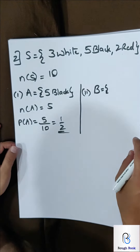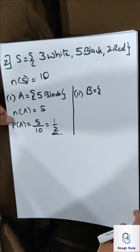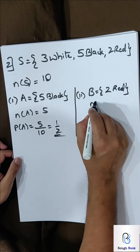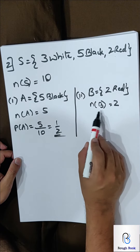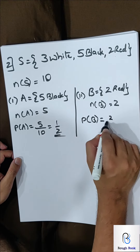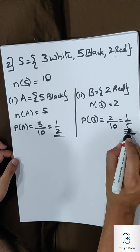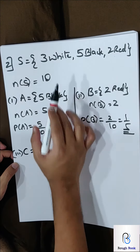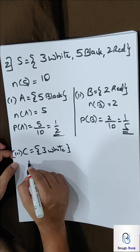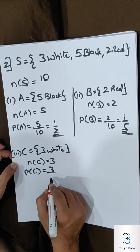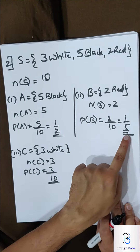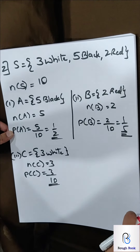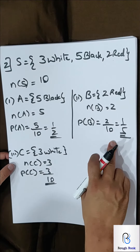Event B: a red ball — 2 red balls. Number of B is 2. Probability of B = 2 by 10 = 1 by 5. Event C: a white ball — 3 white. Number of C becomes 3, so probability of C = 3 by 10. One important thing: if the answer can be reduced, it must be written in reduced form. If you leave it unreduced, you will lose one mark straight away. The board clearly mentions that if the answer can be reduced you are expected to write it in reduced form only.